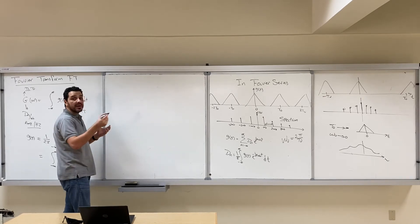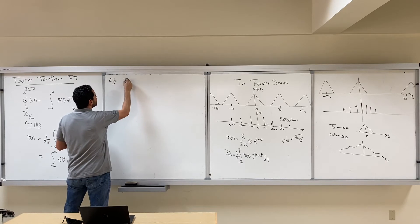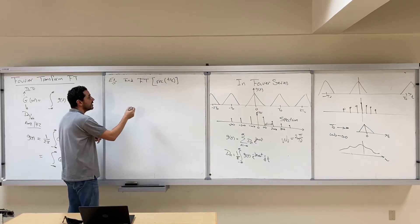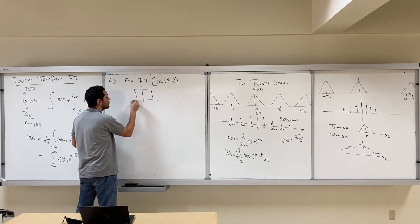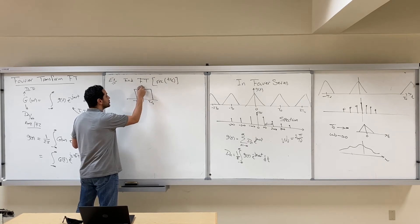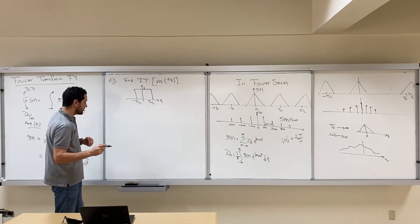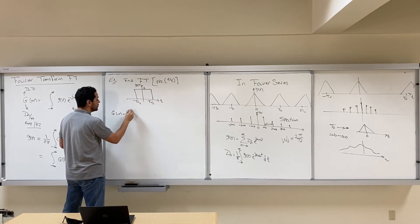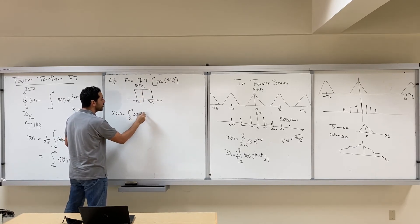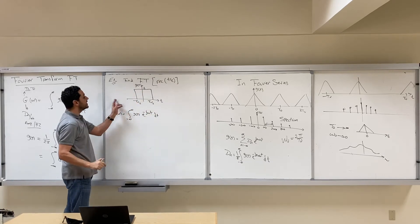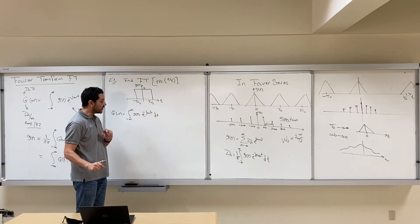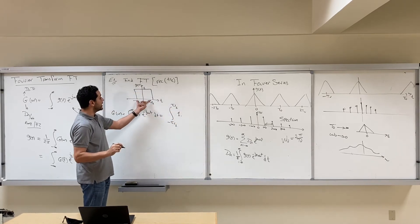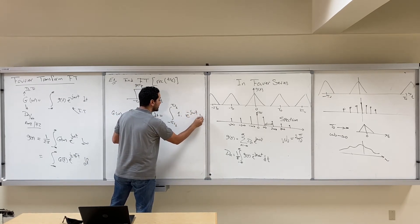Let's go through a quick example. We want to find the Fourier transform of rect(t/τ). This is a rect function that goes from minus τ/2 to τ/2 with amplitude 1. Applying the Fourier transform expression, we integrate from minus infinity to infinity of g(t) exponential minus jωt dt. Since g(t) is zero everywhere except from minus τ/2 to τ/2, the integration reduces to the integral from minus τ/2 to τ/2 of 1 times exponential minus jωt dt.